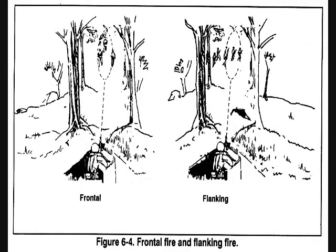B1 — frontal fire. Frontal fire is when the long axis of the beaten zone is at a right angle to the front of the target, such as when firing to the front of a target. B2 — flanking fire. Flanking fire is firing at the side of a target.